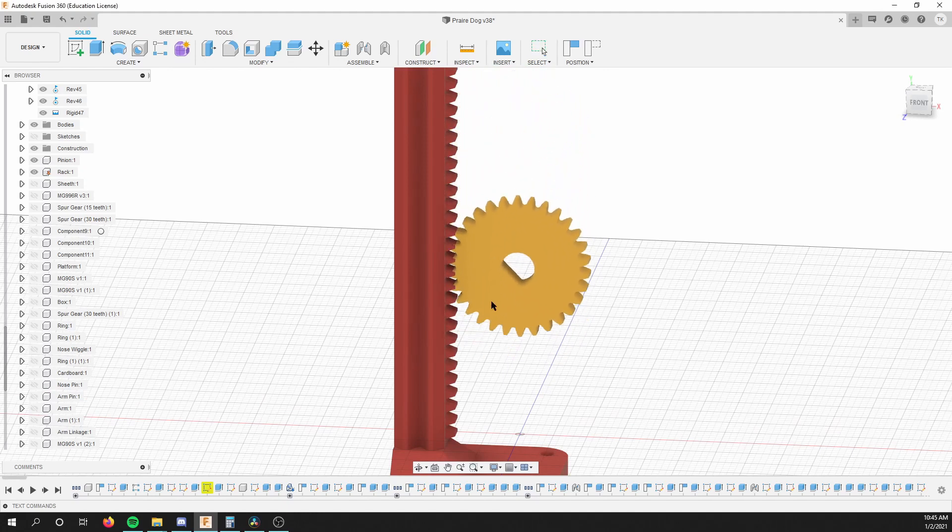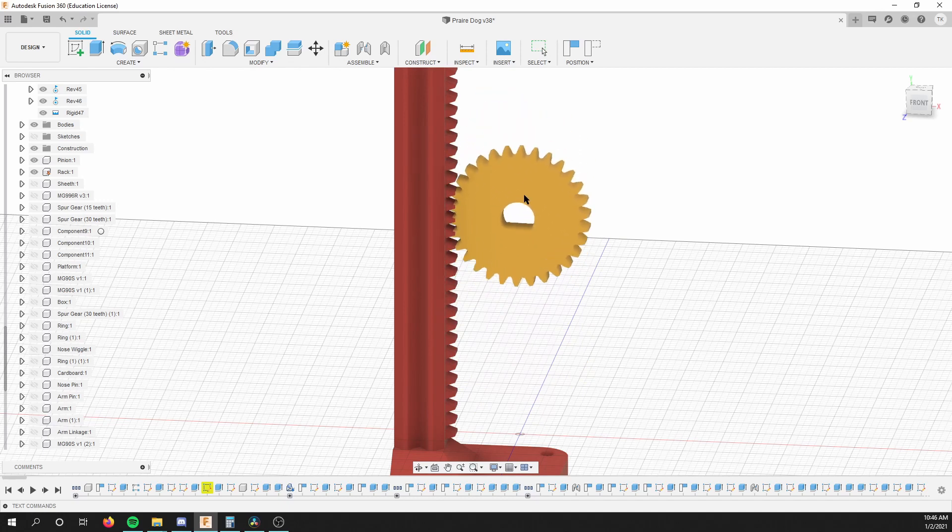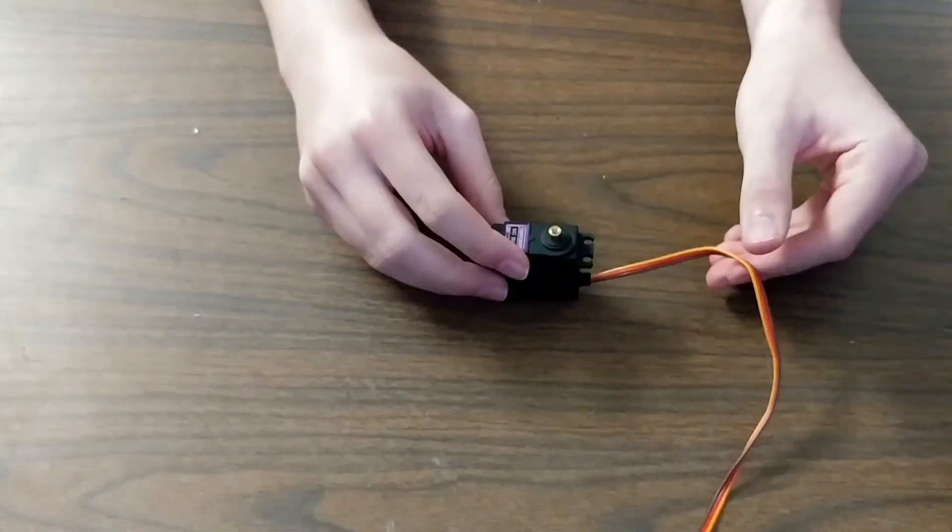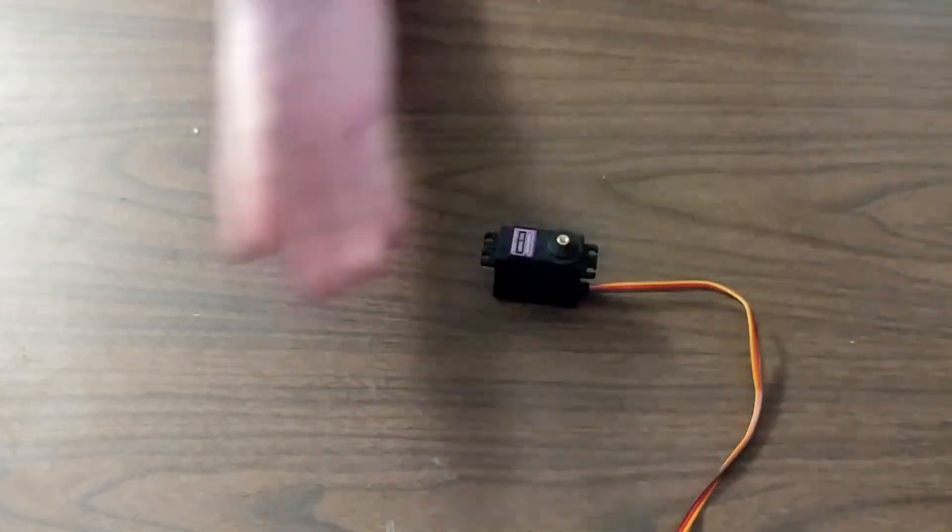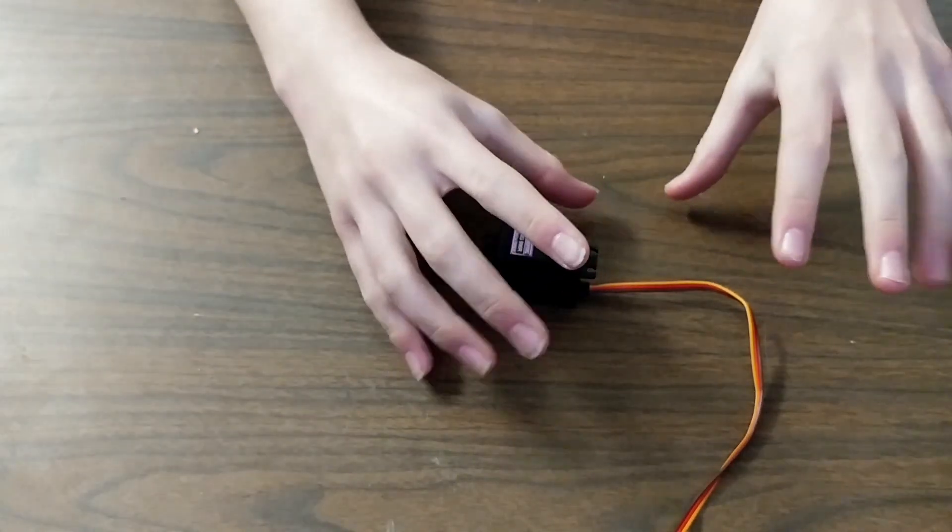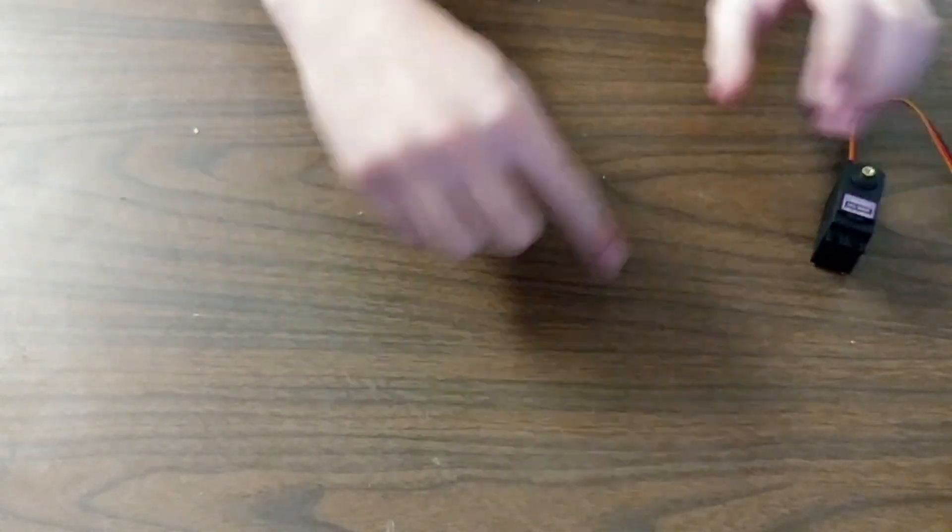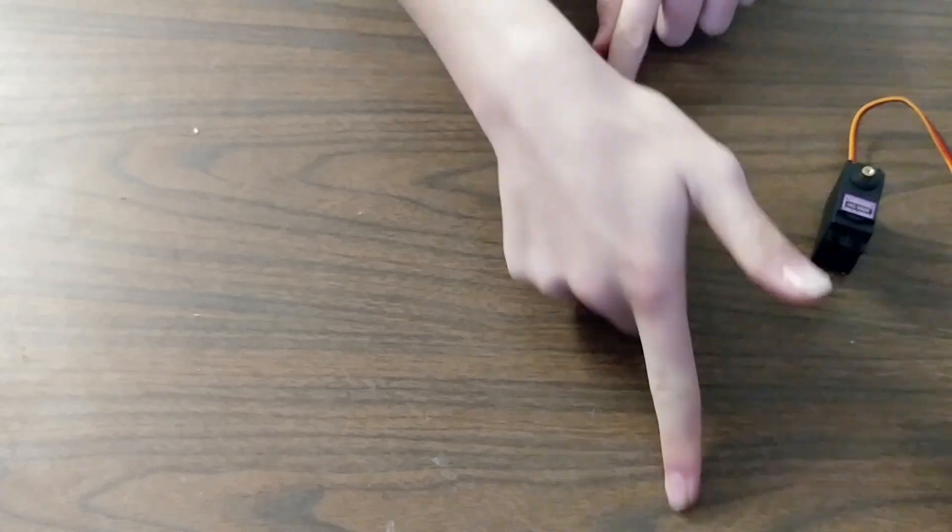Ignore that the teeth are way out of phase in this model, but the 3D model is exactly how it works. Another way to think about a rack is it's just a finite segment of an infinitely large gear. So, from our finite point of view, the rotation of an infinitely large gear appears to be linear motion.